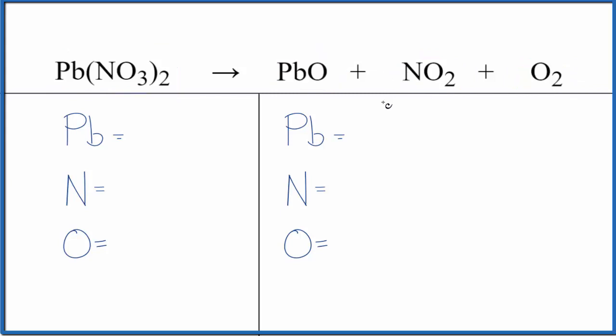Let's balance the equation. First, we need to count all the atoms up. 1 lead, and then this 2 applies to the whole NO3. So 2 times 1 is 2 nitrogens, 2 times 3 is 6 oxygens.